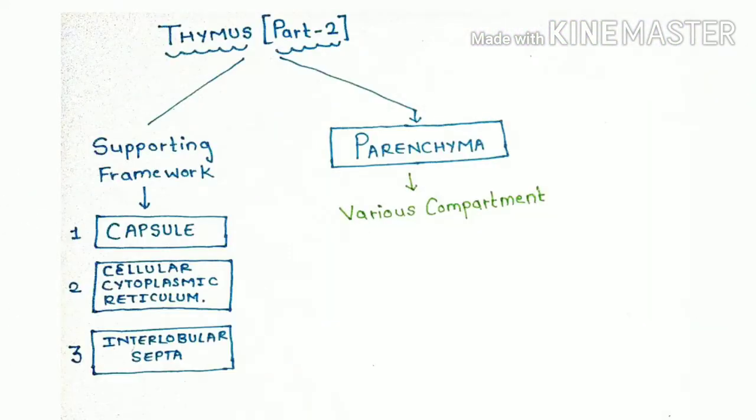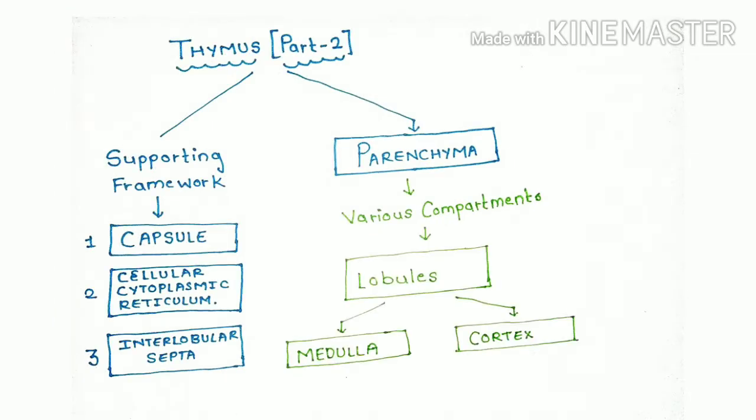Thymus has two important structures. The first is the supporting framework, which includes the capsule, cellular cytoplasmic reticulum, and interlobular septa. The other structure is called the parenchyma, which appears as various compartments called lobules, and these lobules have two regions: medulla and cortex.